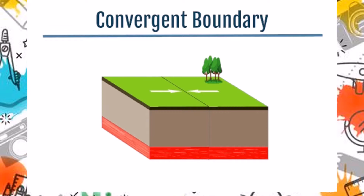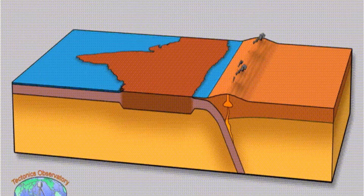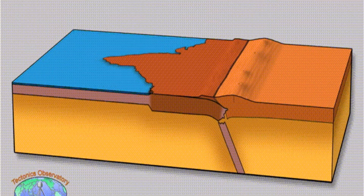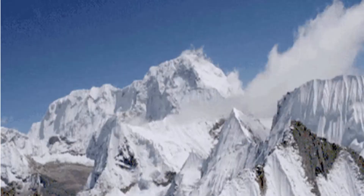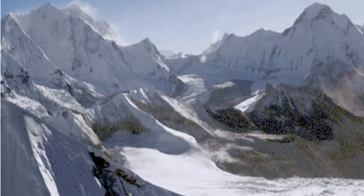At convergent boundaries, plates collide with one another. The collision buckles the edge of one or both plates, creating a mountain range or subducting one of the plates under the other, creating a deep seafloor trench. At convergent boundaries, continental crust is created and oceanic crust is destroyed as it subducts, melts, and becomes magma. Convergent plate movement also creates earthquakes and often forms chains of volcanoes.